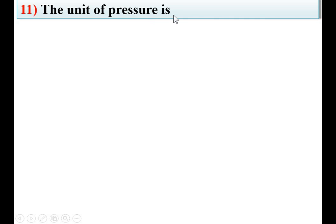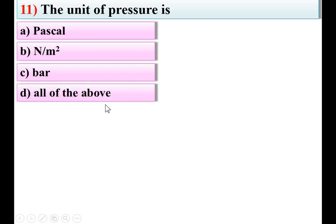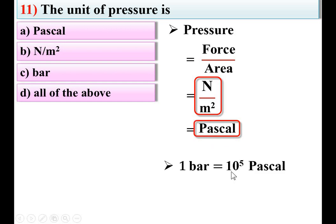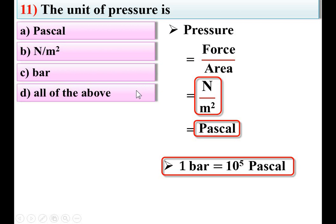Next: the unit of pressure is — options: Pascal, Newton per meter square, bar, all of the above. Pressure equals force divided by area. Unit of force is Newton and area is meter square, giving Newton per meter square. Newton per meter square is itself called Pascal. Also, one bar equals 10⁵ Pascal, so bar is also a unit of pressure. Therefore D — all of the above — is the right answer.